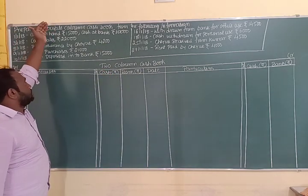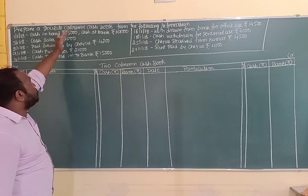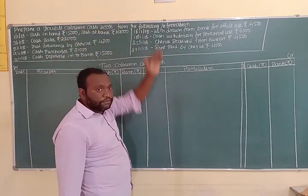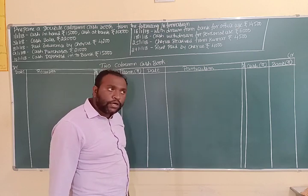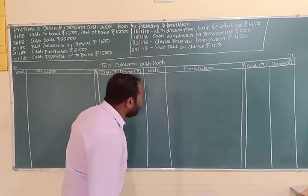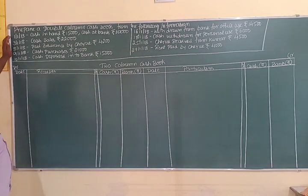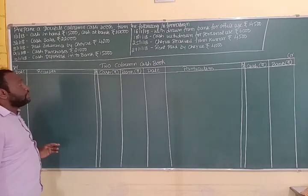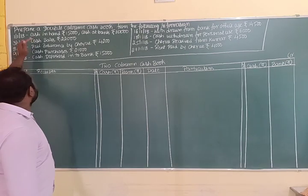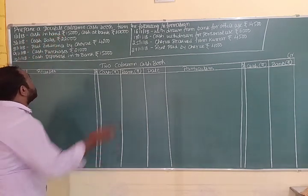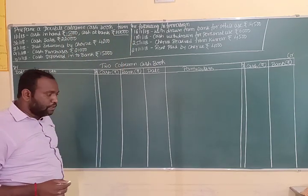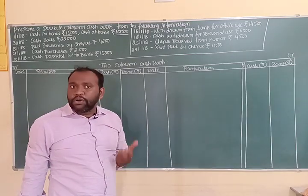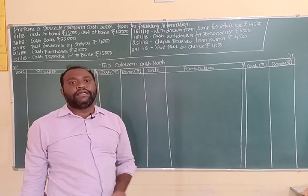Now prepare a double column cash book — that is, a two column cash book — from the following information. On 1st January 2018, cash in hand is rupees 15,000 and cash at bank is rupees 10,000.